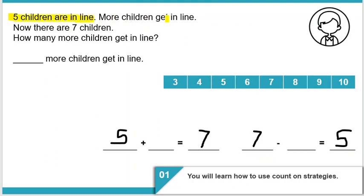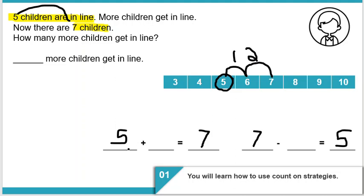Five children are in line. More children get in line. Now there are seven children. How many more children get in line? We start at five and count on to seven: five, six, seven — that's one, two. So five plus two equals seven. And since subtraction is the opposite operation, seven minus two equals five.